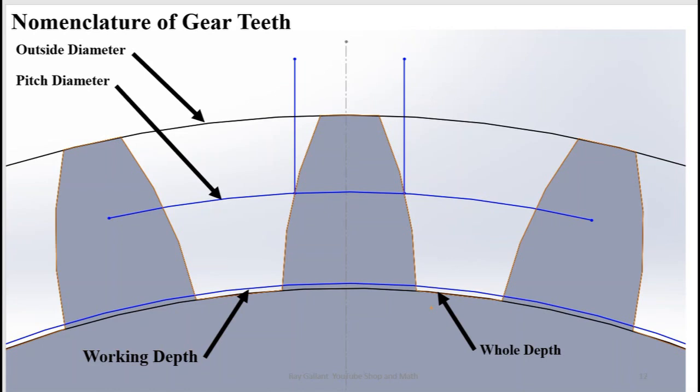The depth of a tooth space equal to the addendum plus the dedendum, or the depth to which the tooth is cut. So basically the whole depth is the depth that you're going to take your cutter to. Addendum: the distance the tooth extends above the pitch circle. Dedendum: the distance the tooth extends below the pitch circle.